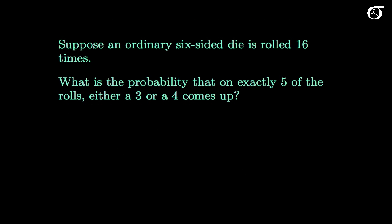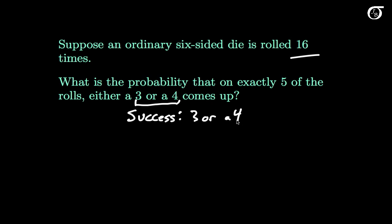Suppose an ordinary six-sided die is rolled 16 times. What is the probability that on exactly five of the rolls, either a 3 or a 4 comes up? We have a fixed number of trials: 16. Each trial actually has six possibilities — the numbers 1 through 6 — but we are only interested in whether a 3 or a 4 comes up. So we redefine this: a success is getting a 3 or a 4, and a failure is getting anything else — the numbers 1, 2, 5, or 6. So even though there were six possibilities to begin with, we've redefined it into two outcomes: success and failure.